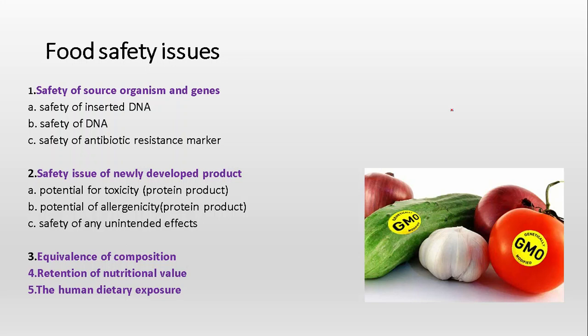Third is equivalence of composition — the amount of the desired product of the gene should be accurate, and the gene should form product only if it is required. Fourth is retention of nutritional value. When we add a new gene and expect it to increase quality or nutritional value, the product should retain that value and should not suppress other nutrients already present in the crop or vegetable.